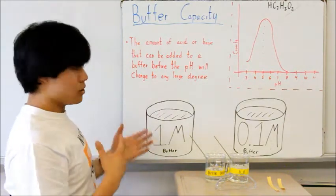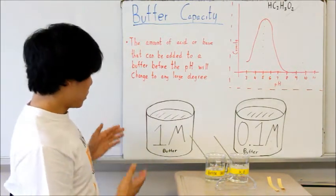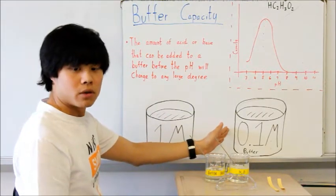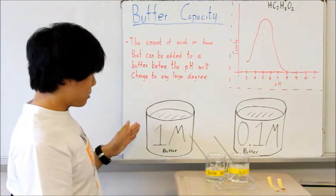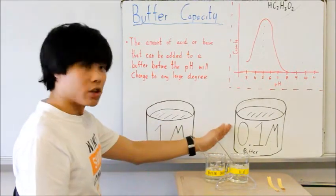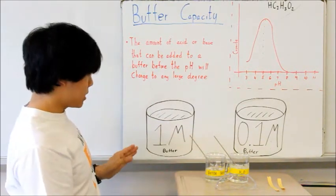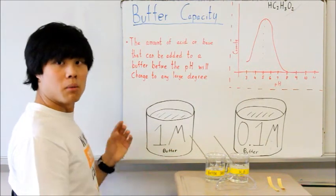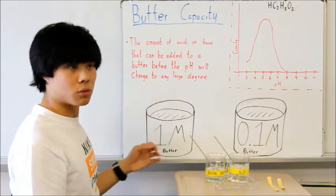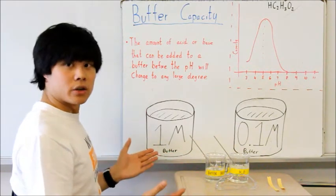Now, if you have two solutions for example, one with a 1 molar buffer and the other one with a 0.1 molar buffer, it's obvious to see that the buffer 1 molar can neutralize a lot more acid or base than the 0.1 molar. The reason is, the 1 molar buffer has 1 mole of the ions used for neutralization.